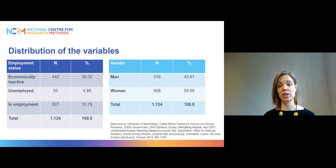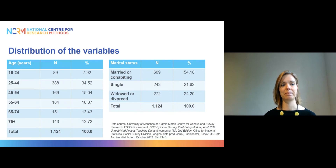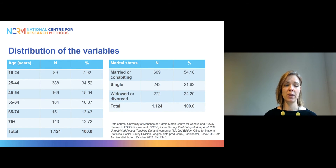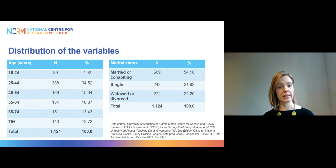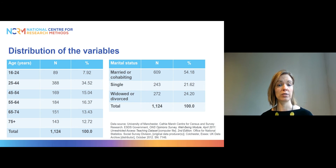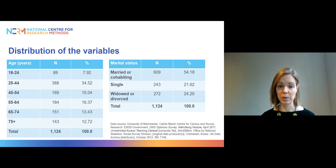When it comes to gender, there are slightly more women than men in the sample: 54% versus 46%. Here's the distribution of the other variables. We have categorical age, and as you can see we have respondents ranging from age 16 to 75 plus. The largest age group is 25 to 44 year olds, which is about 35% of the sample.